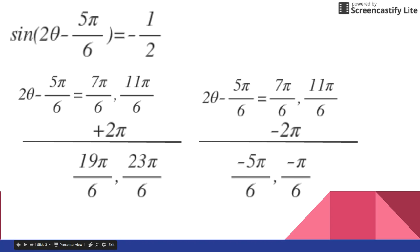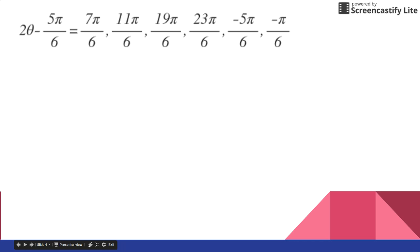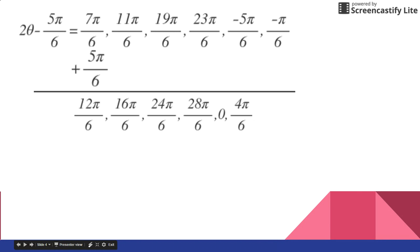So now I have six answers. Then I'm going to write them all out in one big long line here. So there's all my answers up there. And then I'm just going to solve this simple equation here. I'm going to add 5π over 6 to both sides. And so then I get all those six answers right there. And then I'm going to divide by 2 to solve for θ.